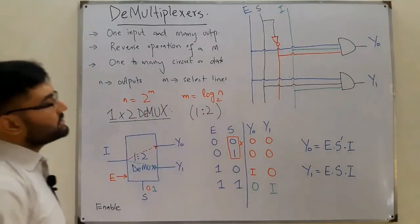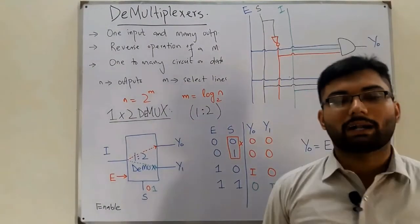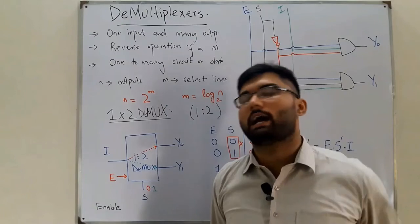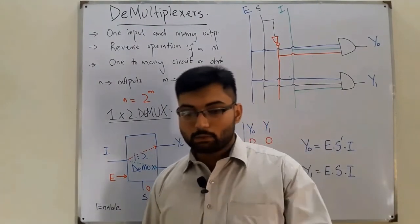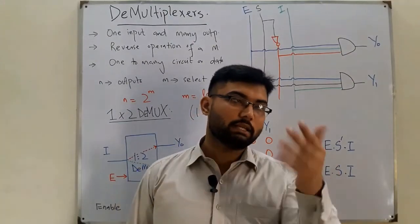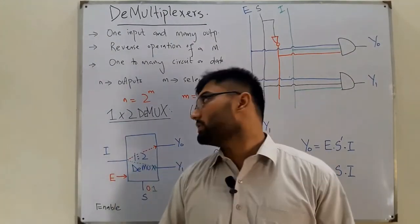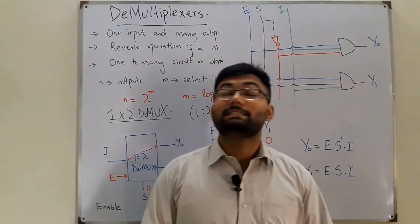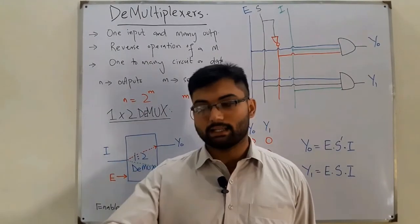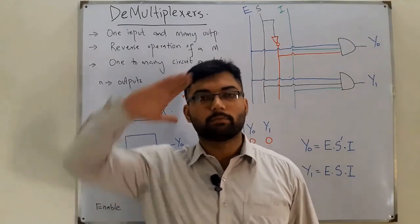So that's the demultiplexer: it takes one input and directs it to any of the output lines, which are more than one. It is the opposite of a multiplexer. We covered the 1×2 demultiplexer today; in the next video we'll see the 1×4. Take care, goodbye.